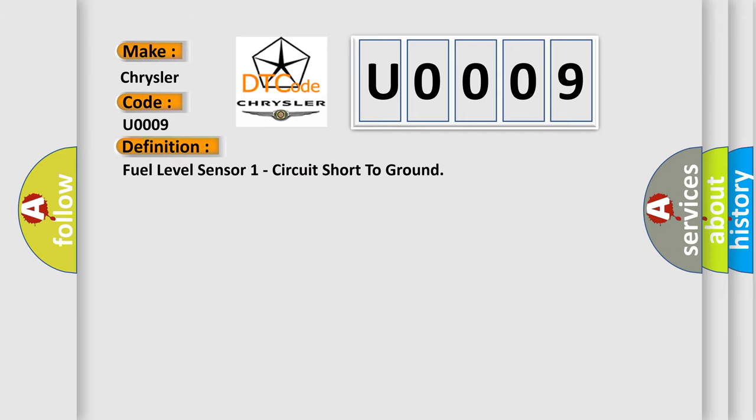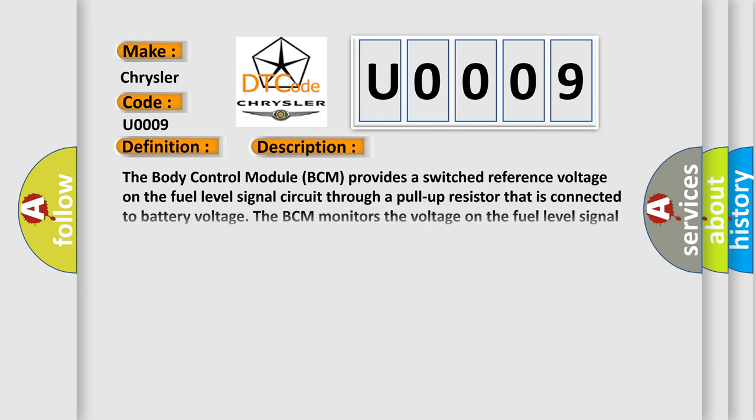The basic definition is fuel level sensor one circuit short to ground. The body control module BCM provides a switched reference voltage on the fuel level signal circuit through a pull-up resistor that is connected to battery voltage. The BCM monitors the voltage on the fuel level signal circuit.